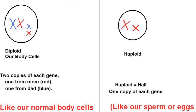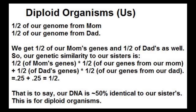Let's compare the relatedness of sisters in a diploid species with the relatedness of sisters in a haplodiploid species. To determine relatedness, we have to consider two halves of the genome: half inherited from the mother and half inherited from the father. In a species where males and females are both diploid, like us, the independent assortment of alleles will cause about half of the alleles the sisters inherit from their mother to be the same. So, a quarter of all alleles will be the same through the mother.